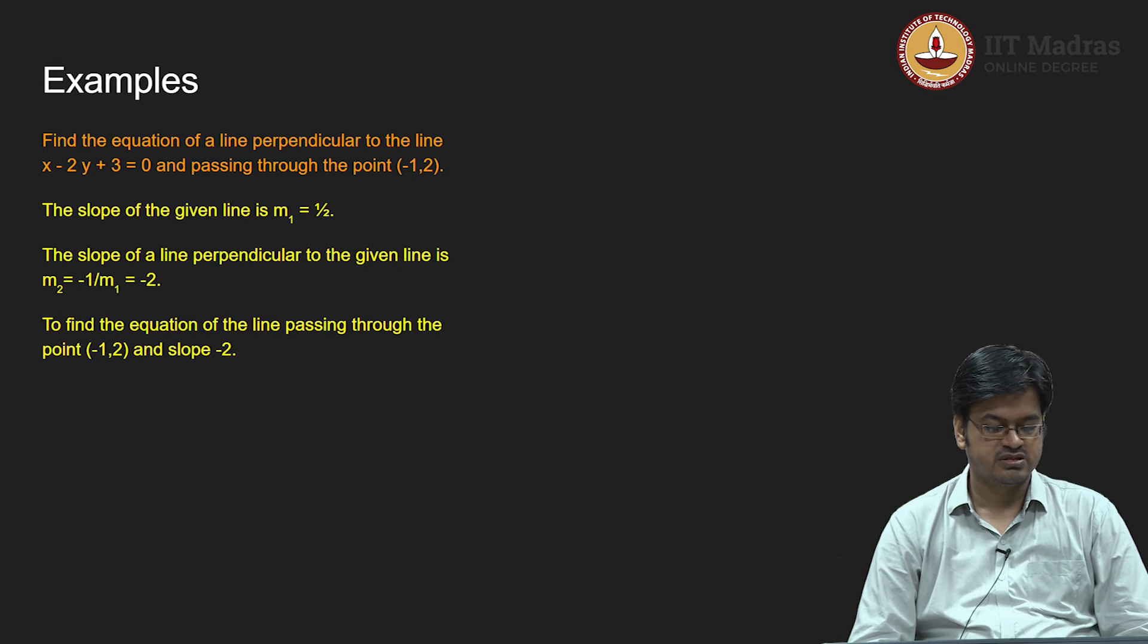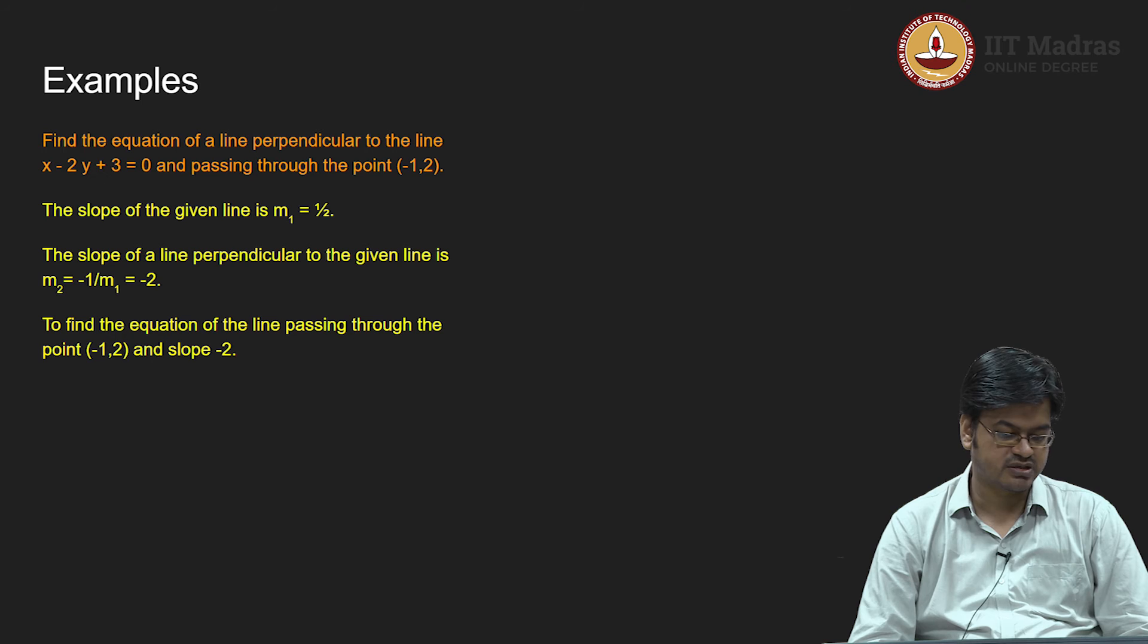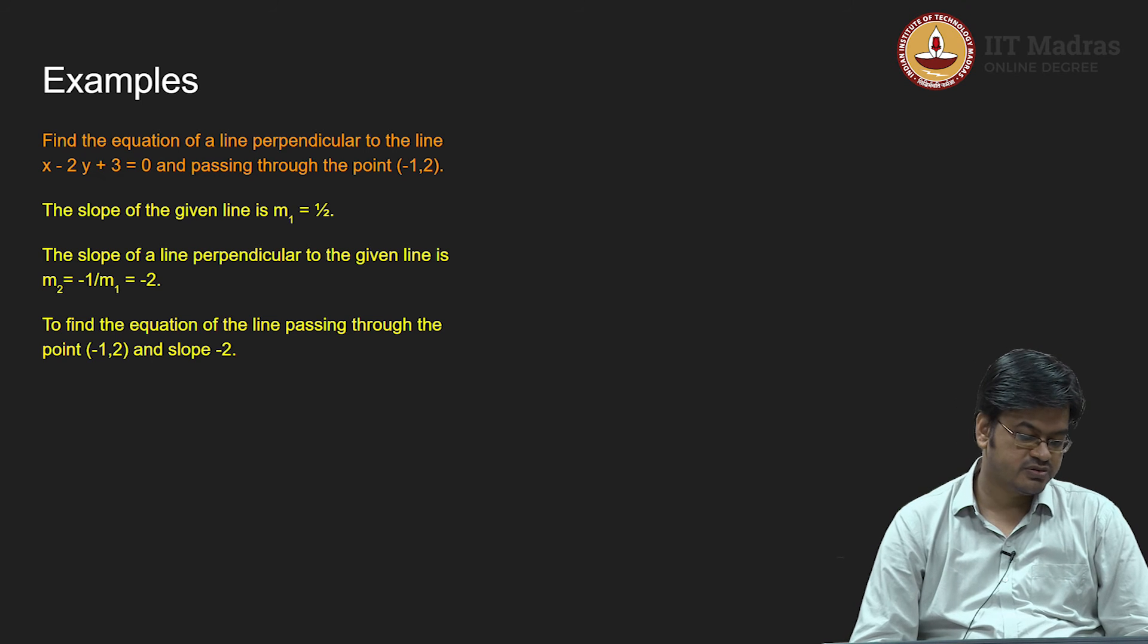Use the slope point form: y minus y naught equals m times x minus x naught. Y naught is 2.